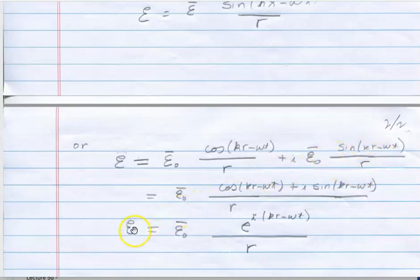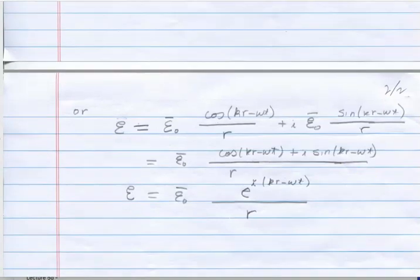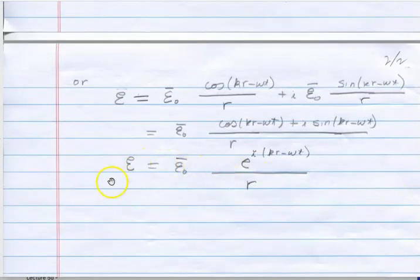then using Euler's relationship, this cosine plus i sine again becomes this exponential. One gets the complex form for the spherical wavelet, and that is often helpful too.